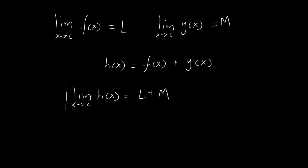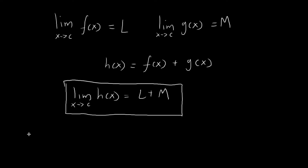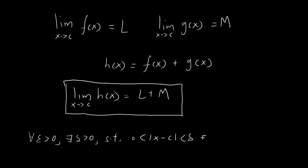So this is what I want to prove in this video. In other words, for whatever value of epsilon you come up with, I can always find a value of delta greater than 0, such that if x is within a distance of delta away from c, then h of x is within a distance of epsilon away from l plus m. If I can establish this epsilon-delta definition, then I would have essentially proved this.